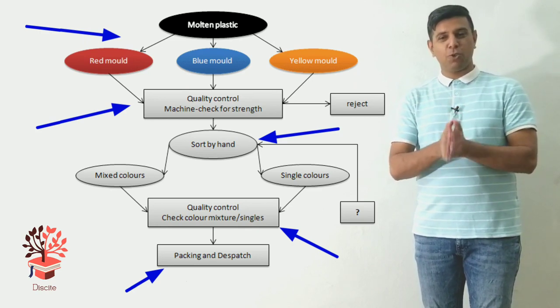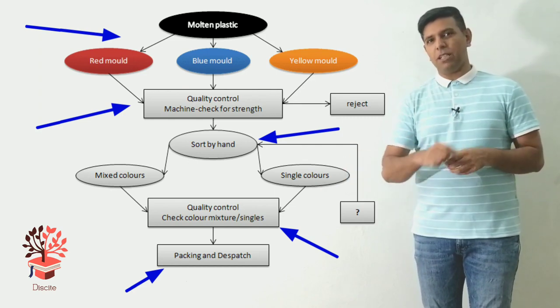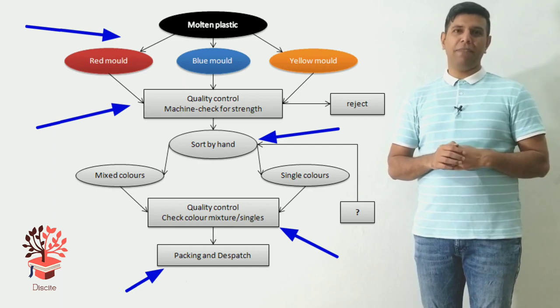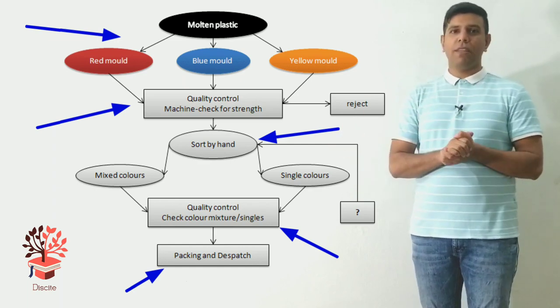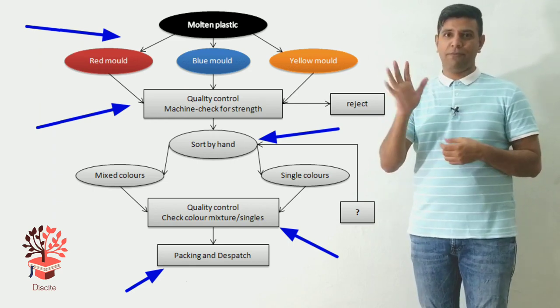Third step: sorting the paper clips manually. The next one: quality control again, but this time for its colors. The last one: packing and dispatching. So that's the last one. Five steps for me. For you, I don't know.